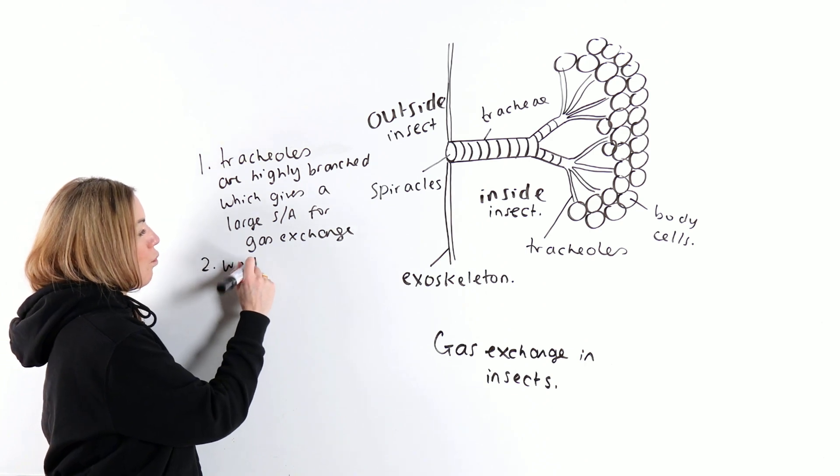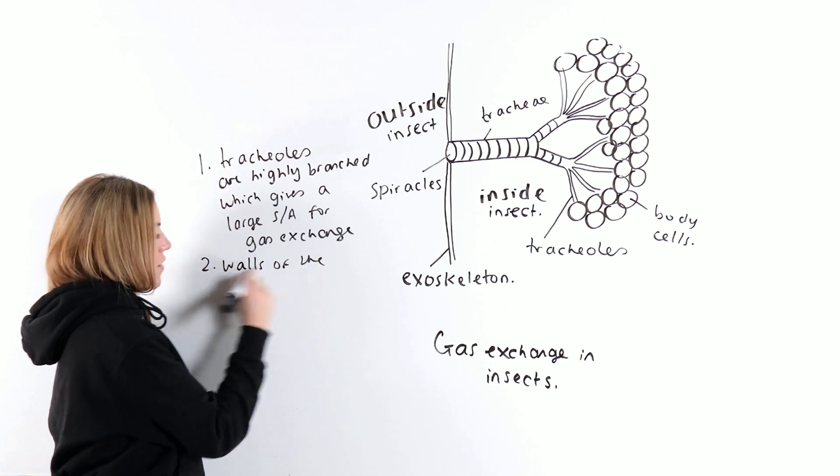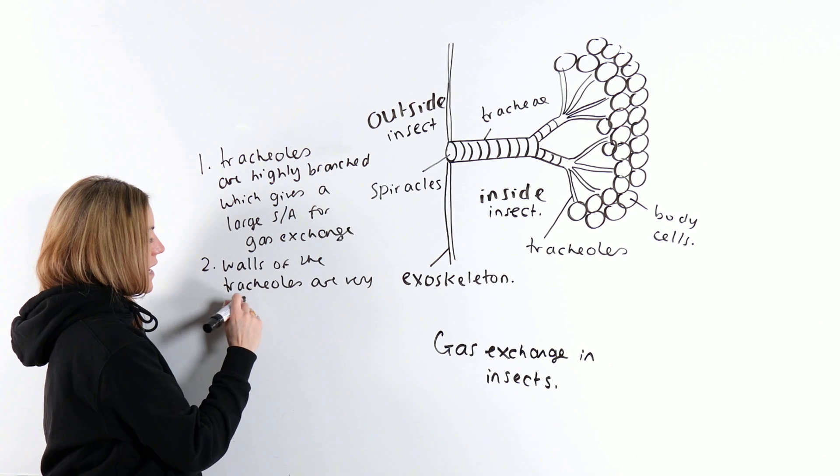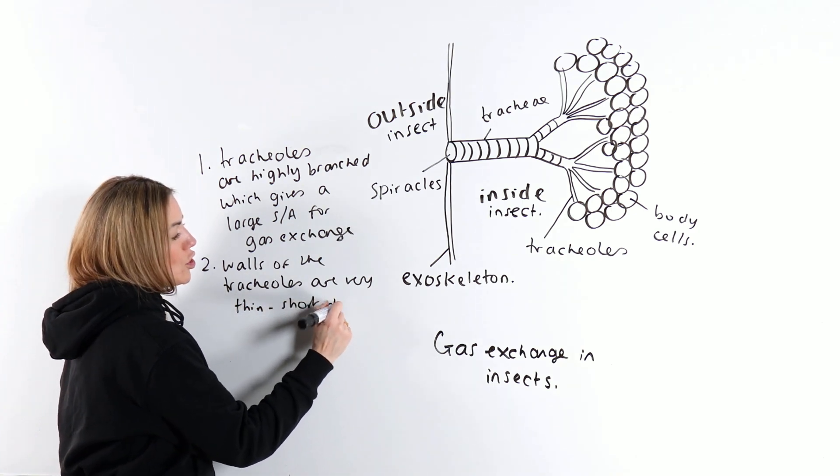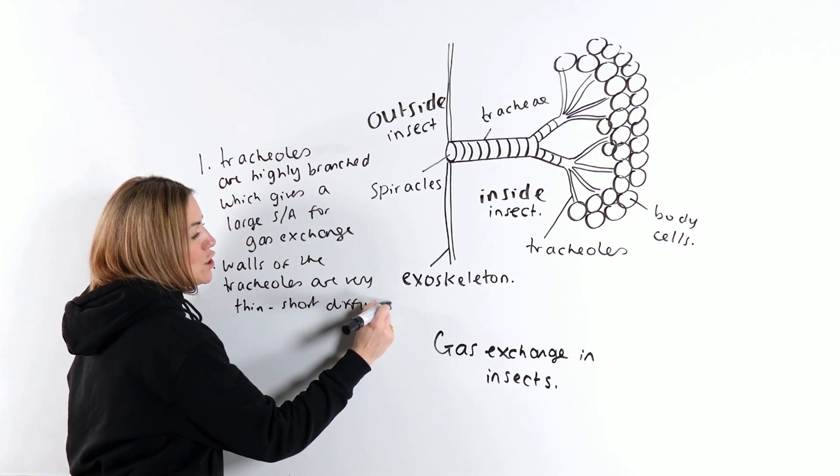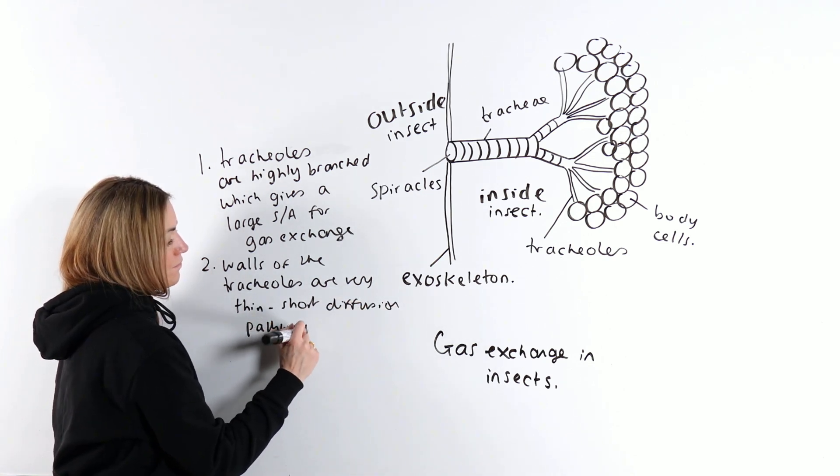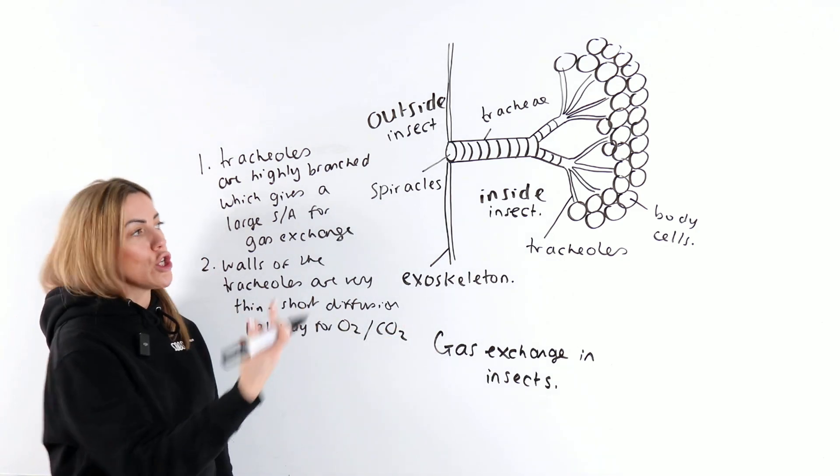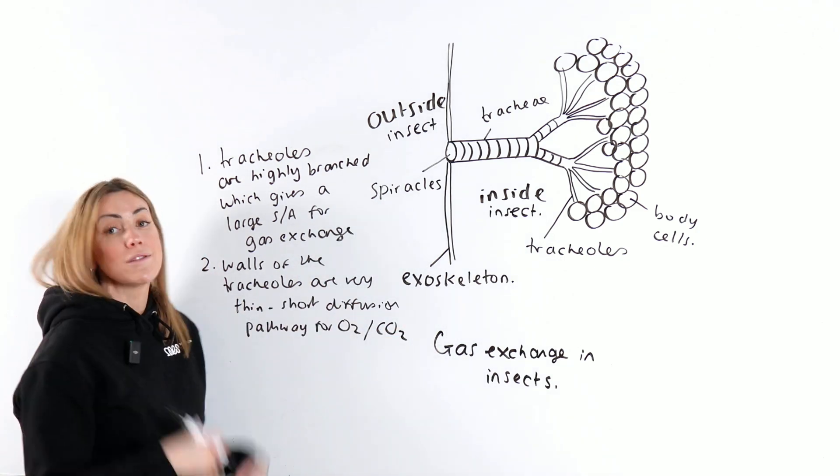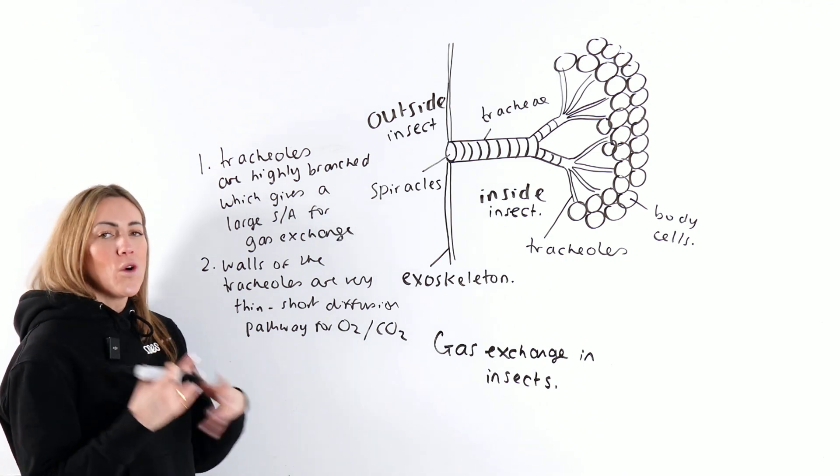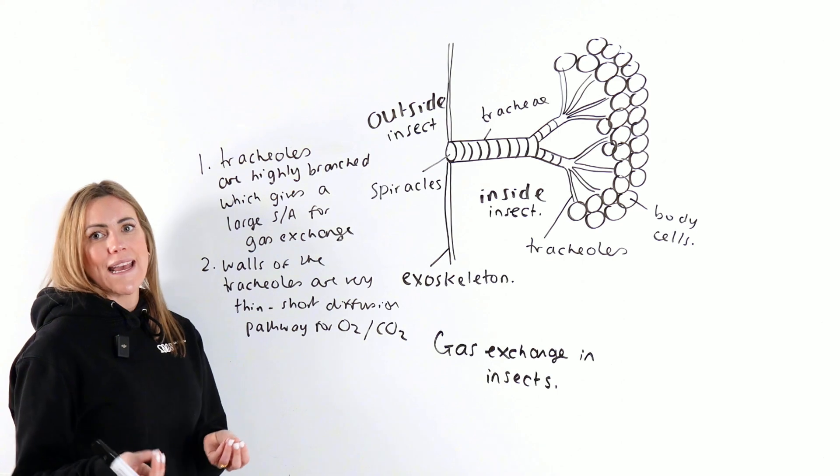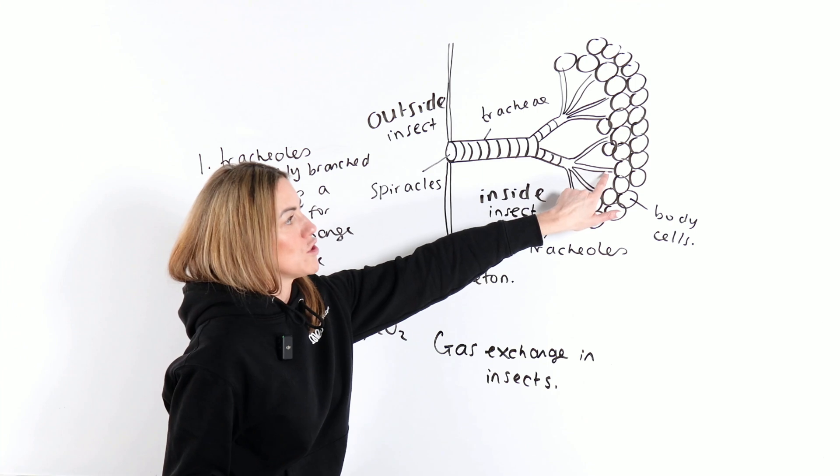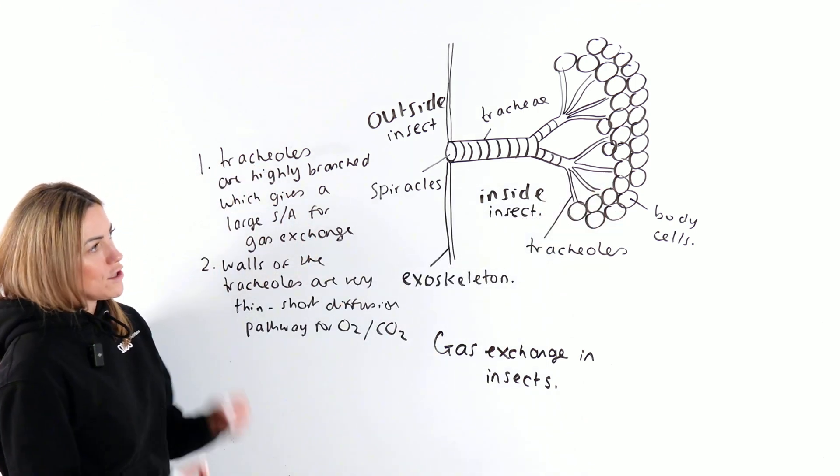Also, the walls of the tracheoles are very thin, so we've got a short diffusion pathway for oxygen going into the cells and CO2 going from the cells back into the tracheoles. And again, this is like the alveoli. The walls of the alveoli are a single layer of epithelial cells to give a short diffusion pathway. Here, the walls of the tracheoles are very thin to give a short diffusion pathway.